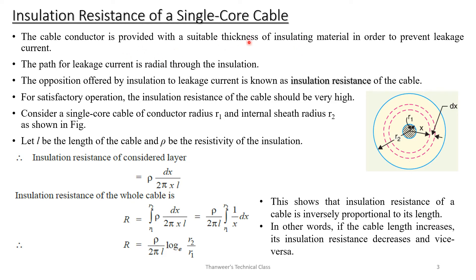The cable conductor is provided with suitable thickness of insulated material in order to prevent leakage. The path for leakage current is radial throughout the insulation. The opposition offered by the insulation to leakage current is known as insulation resistance. For satisfactory operation, the insulation resistance of the cable should be very high.